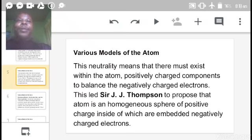This neutrality means that there must exist within the atom positively charged components to balance the negatively charged electrons. Though these atoms were seen to have electrons by Crookes, these atoms remained neutral, meaning there must be the same number of opposite positive charges which will make such atoms balanced.